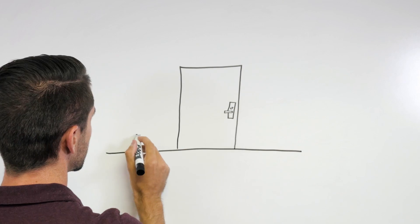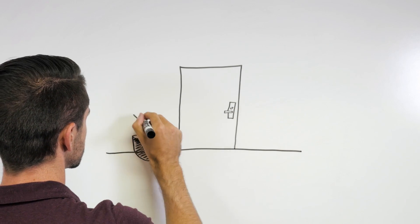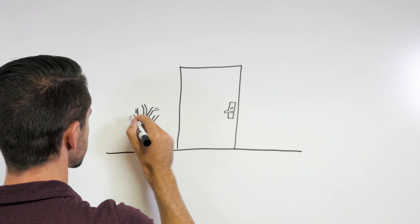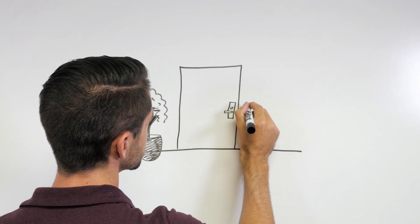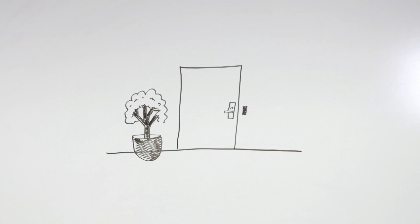Manufacturers such as Von Duprin offer many electric strikes to accommodate different types of locks and exit hardware. Along with wireless electronic locks, which we are not addressing in this video, electric strikes are one of the easiest ways to add access control to an opening.